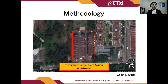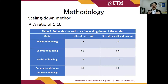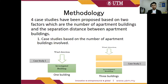The selected low-cost apartment in Iskandaputri is the Pangsapuri Daman Desa Skudai apartment. This apartment complies with the bylaws in terms of floor space and floor plan for low-cost apartments in Malaysia. In order to perform simulation studies in ANSYS Fluent, the buildings have to be scaled down. The ratio was set at 1 to 10 because many attempts at higher and lower ratios were made, and results showed that 1 to 10 gives the best representation of wind flow. Four case studies have been proposed based on two factors: the number of apartment buildings and the separation distance between apartment buildings.